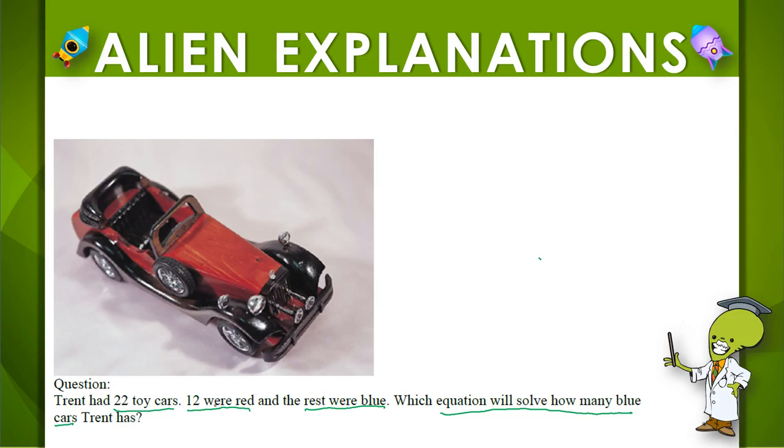We know that there were red and blue cars, and we know that 12 of them were red and that the rest were blue. Well, we don't know how many there are. That's what it's asking us to find. So the two of those together, well that's the 22 toy cars.